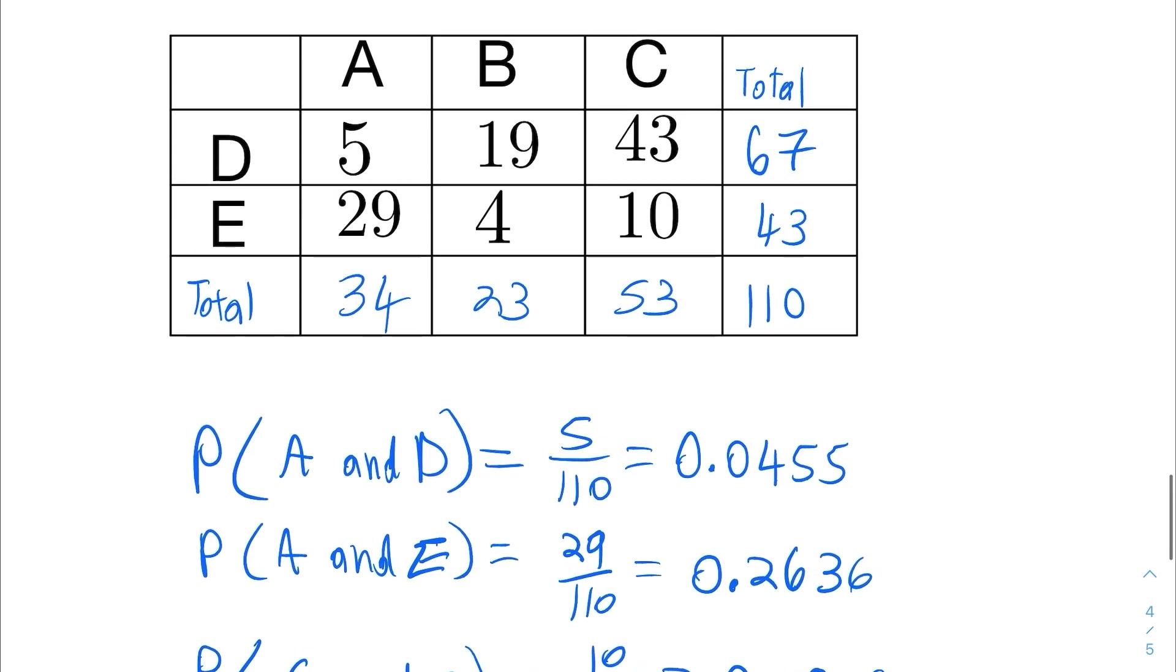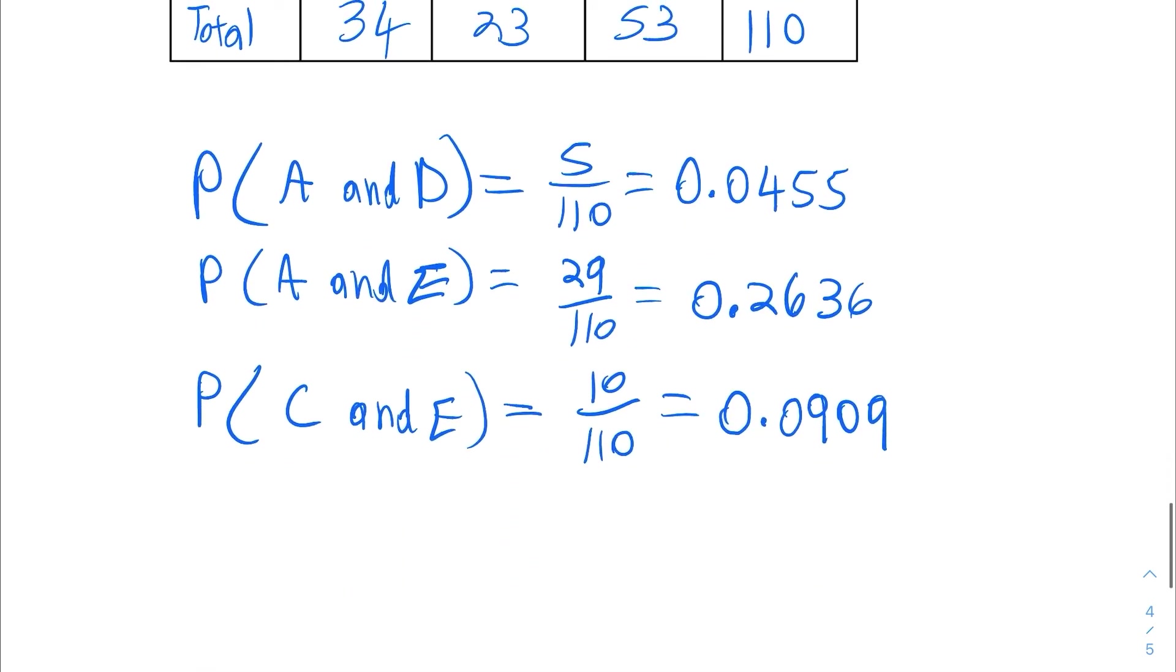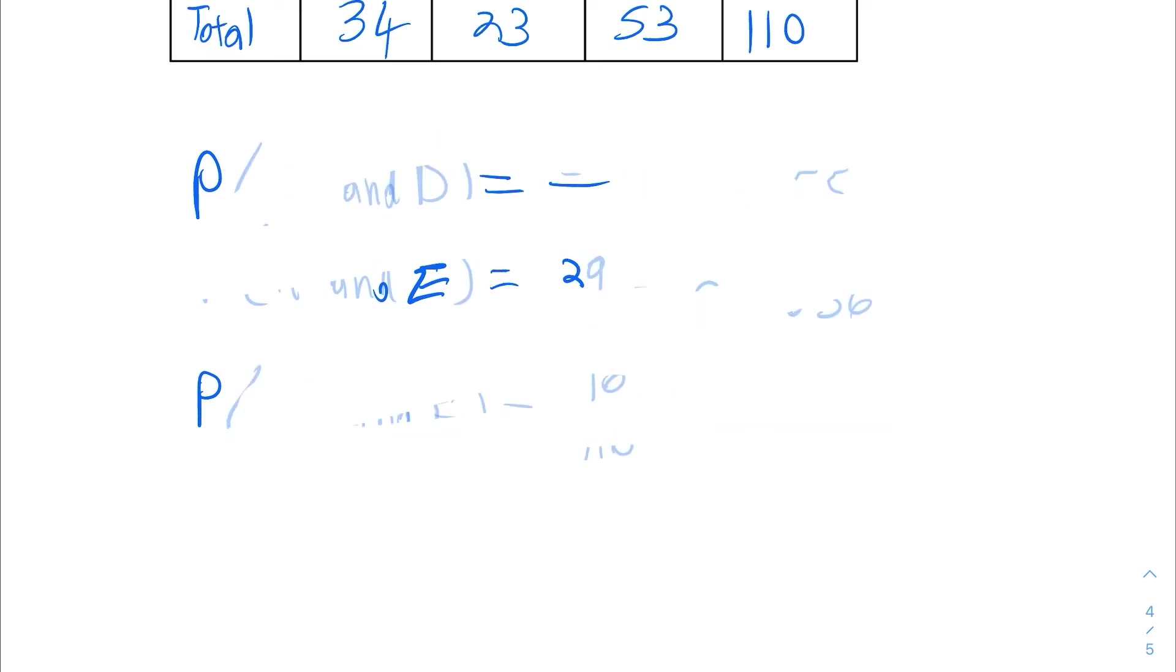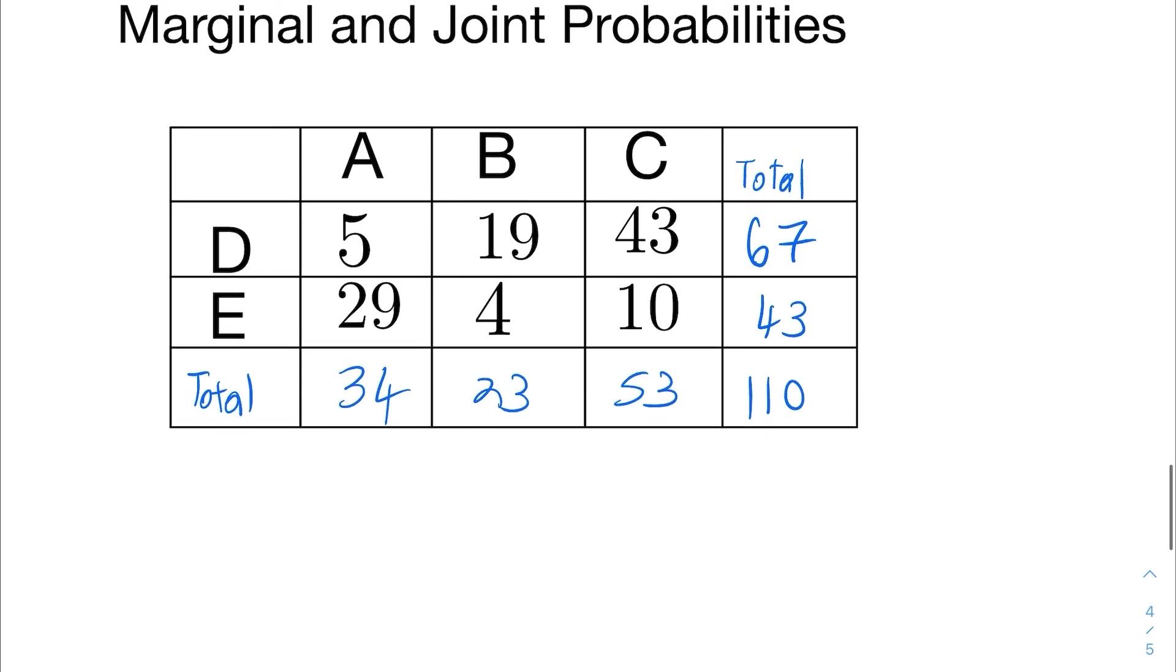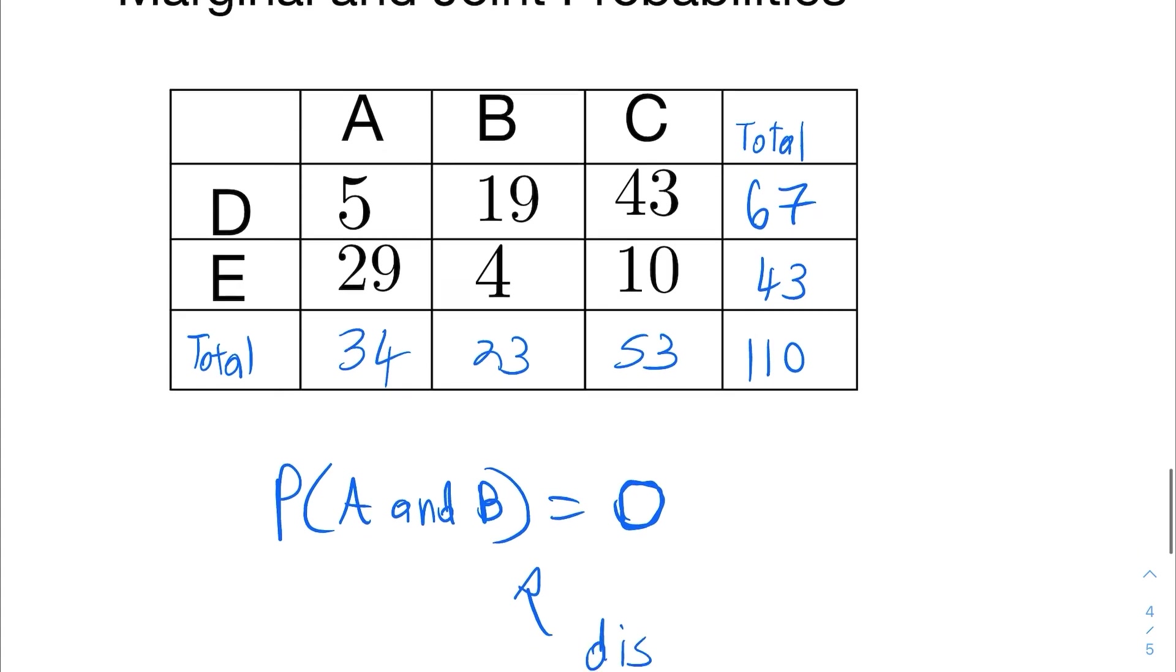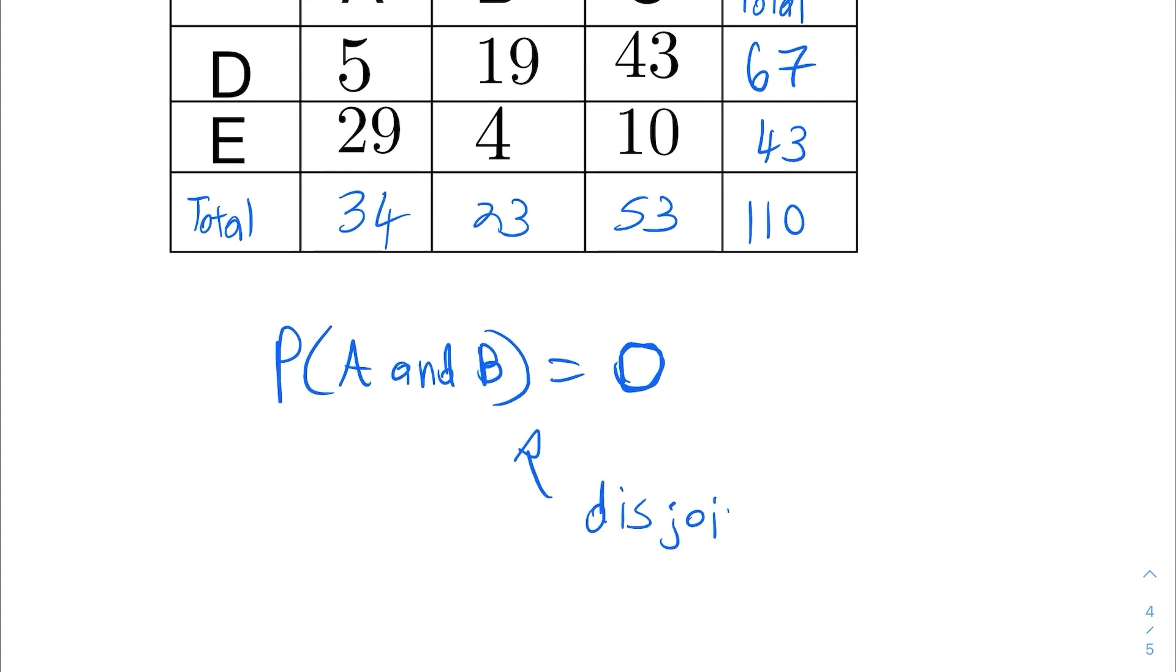So this is how we find joint probabilities. And I want you to notice one thing here. If we try to find the joint probability of, for instance, the probability of A and B, there's no intersection of A and B. Since A and B are both in columns, there is no intersection. Then this probability of A and B is equal to zero, which means that A and B are what we call disjoint. They cannot happen at the same time. So probability of A and B happening at the same time is zero. Their joint probability is zero. This is what we call disjoint or mutually exclusive. So that is marginal and joint probabilities.